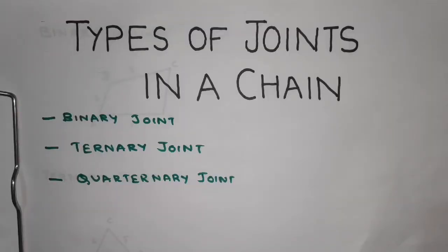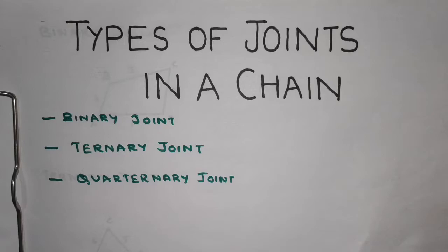Hello friends, welcome to the next lecture in kinematics of machines. In today's lecture we will see types of joints in a kinematic chain. We come across three types of joints: the binary joint, the ternary joint, and the quaternary joint.